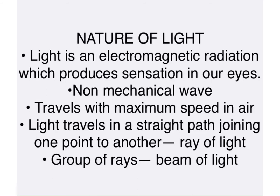Let us revise the points related to nature of light. First, it is an electromagnetic radiation that produces sensation in our eyes. Second, it is a non-mechanical wave. Third, it travels with maximum speed in air which is 3 × 10⁸ meter per second. A straight line path joining one point to another in the direction of propagation of light is called a ray of light, and a group of such rays is called a beam of light. When light is incident on any medium it is either reflected or refracted and partially absorbed.